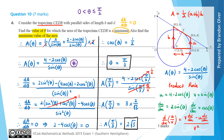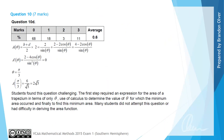From the examiner's report, students found this question very challenging, with only 11% of students getting full marks and 68% getting zero marks. The first step required deriving an expression for the area of the trapezium in terms of theta only, then using calculus to find the minimising value of theta, and finally substituting back to find the minimum area. Many students did not attempt the question at all, or had difficulty deriving the area function, which prevented them from progressing further.